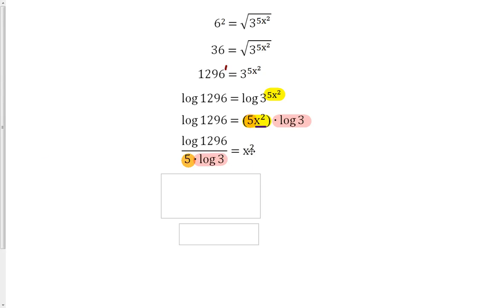Finally, this last step, in order to solve this, we just need to take the square root of both sides. Now, as we always remember, when we take a square root, we want to look at the plus or minus. Because we're dealing with logarithms, you might want to go back and check to make sure that this is going to work. However, I'm just going to point out that in our original equation, we actually don't have any logarithms. We have x squared in our original equation. So you will end up needing that plus or minus. So, plus or minus the square root of log 1296 over 5 times log 3.